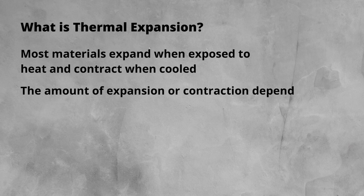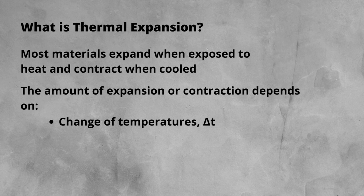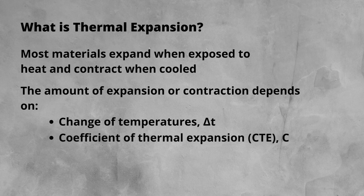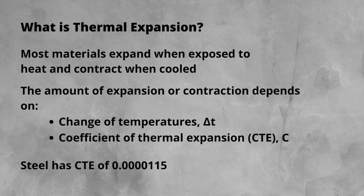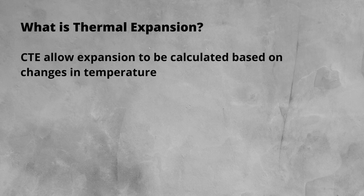The amount a certain material expands or contracts is governed by two factors. First is the change in temperature experienced by the material, noted as a change in or delta T. This is simply the final temperature minus the initial temperature. Second is the coefficient of thermal expansion, which is specific to that material. It can be found on manufacturer's documentation, from universally accepted standards, or experimentally. For a rail, which is made of steel, the coefficient is 0.0000115, or 11.5 times 10 to the minus 6.